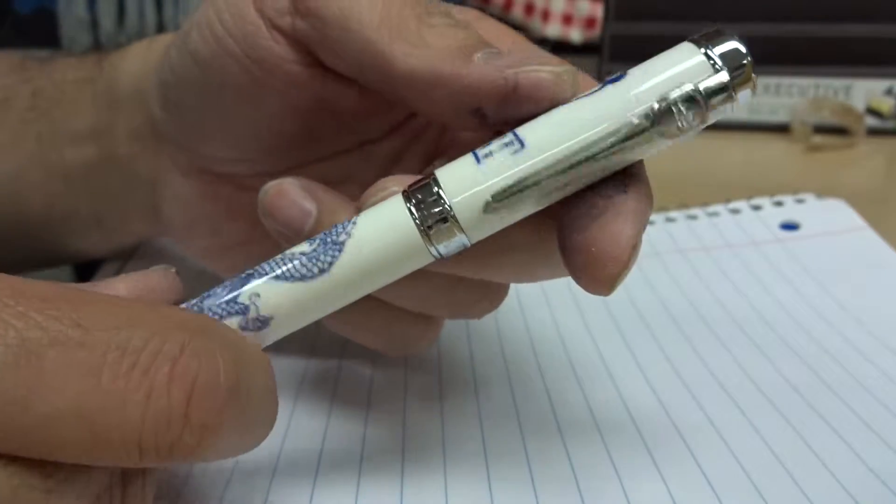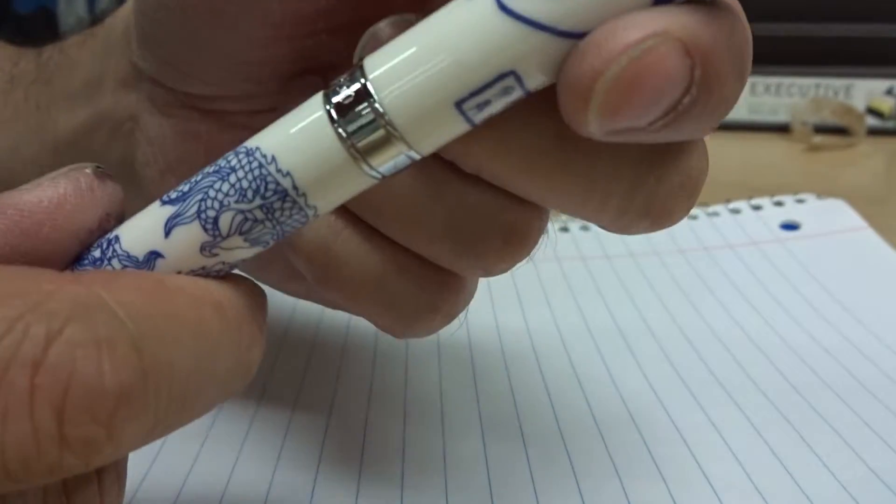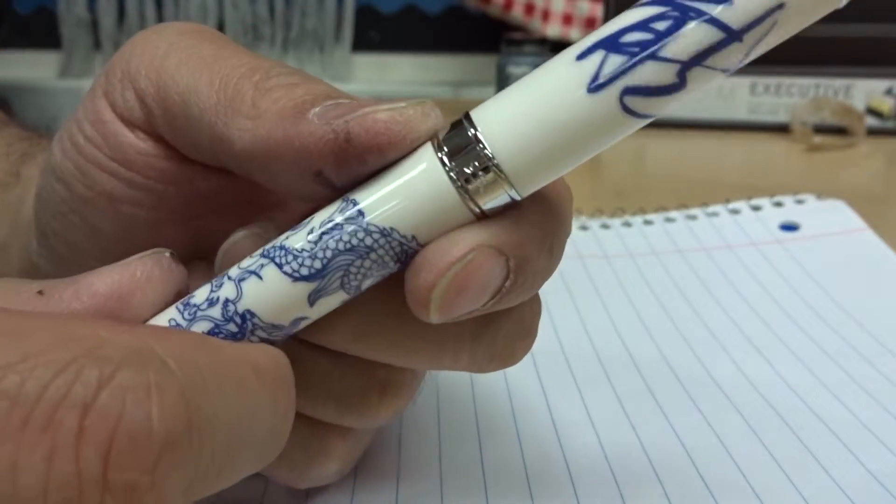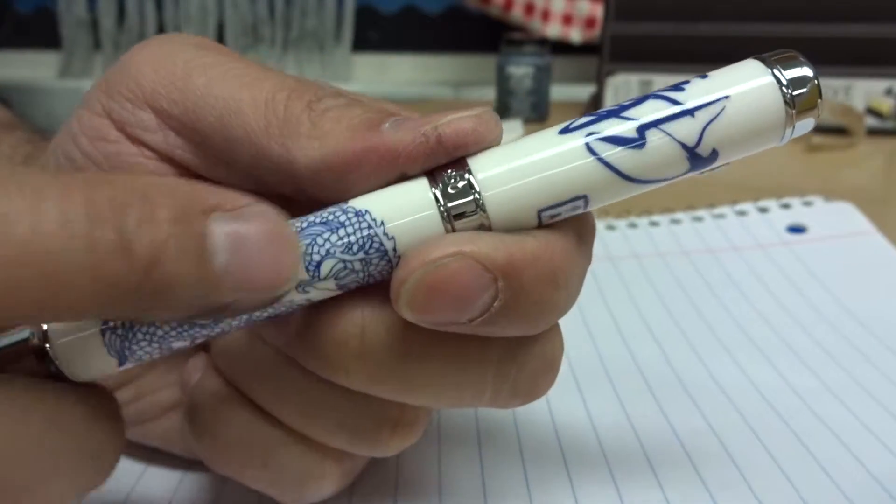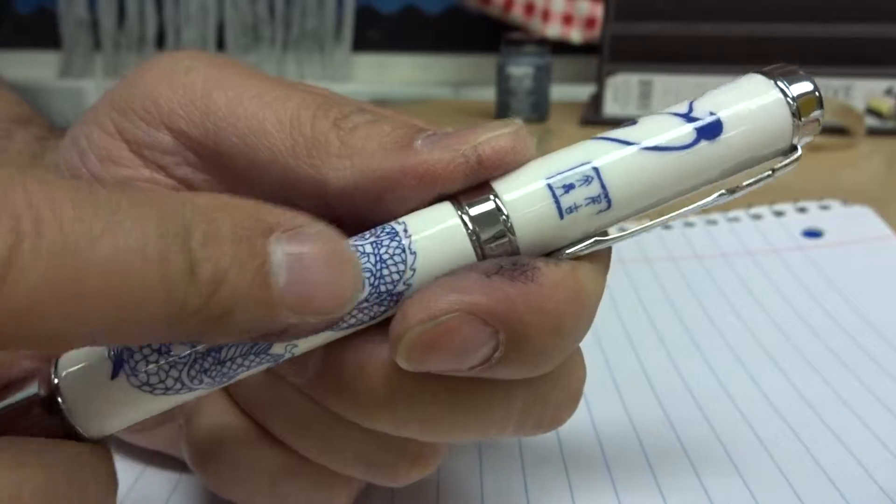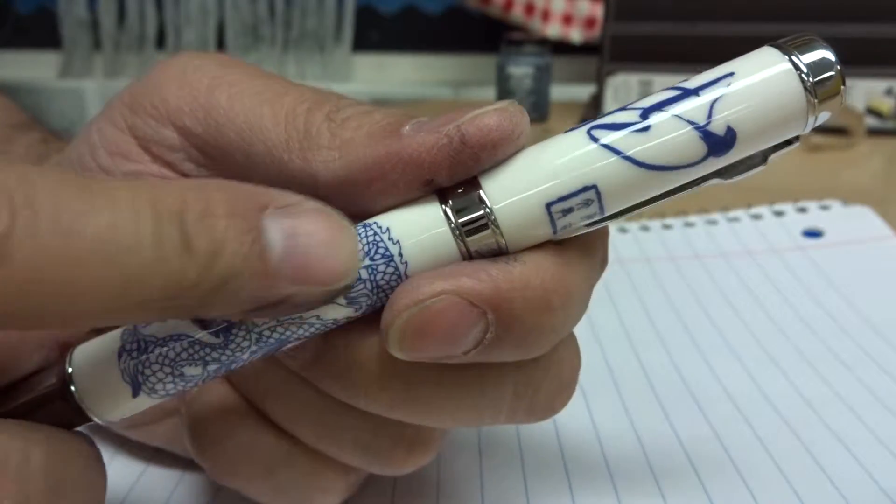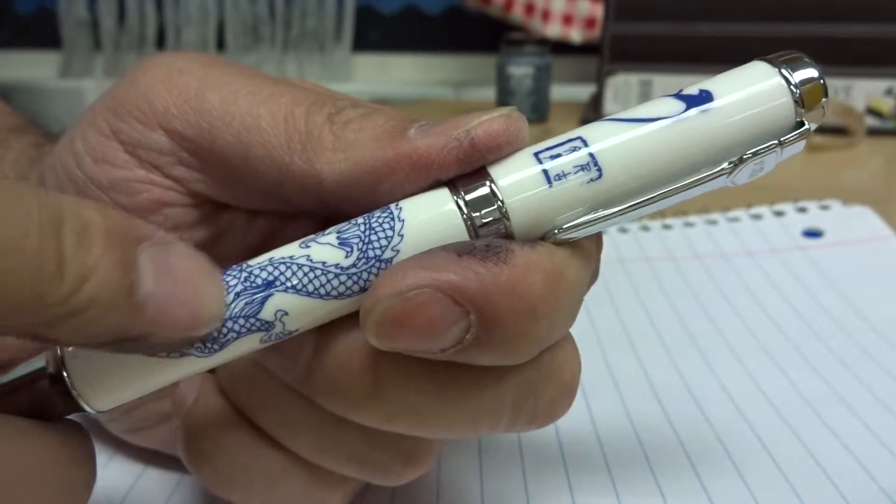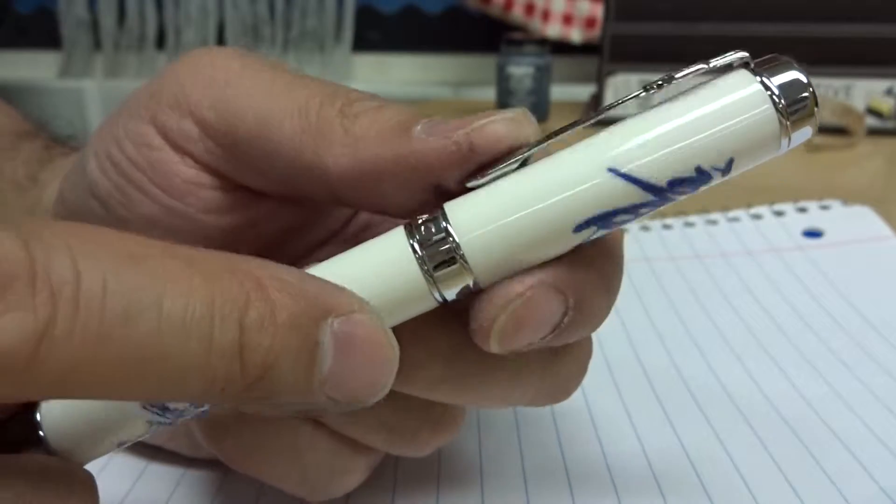This review is on the Jinhao model 950, and this is a porcelain with printed—I mean you can feel it—maybe it's embossed or just silkscreened, blue on white porcelain pen.